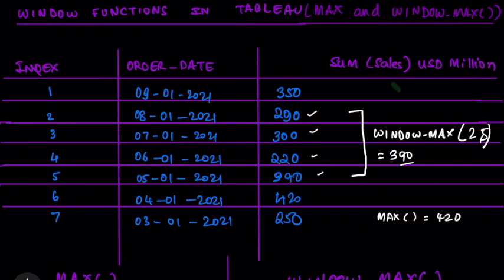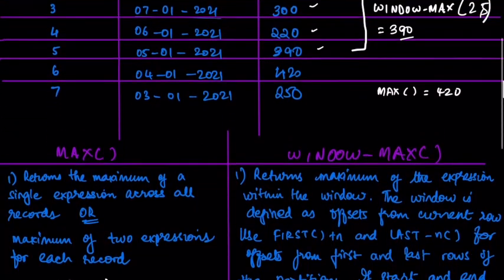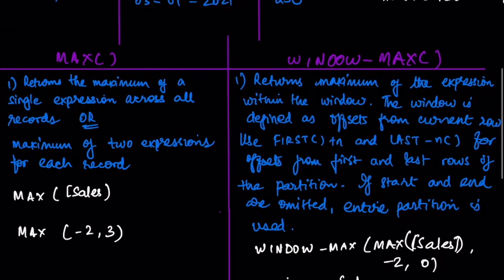Now let's go into the syntax and the way that Tableau defines it. Tableau defines MAX as returning the maximum of a single expression across all of the records — the key point being 'across all of the records.' Another way that MAX is also used is to compare two expressions; for example, MAX(-2, 3) is another valid usage of the MAX function.